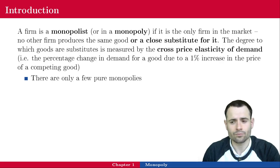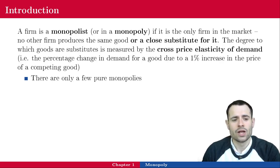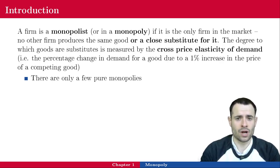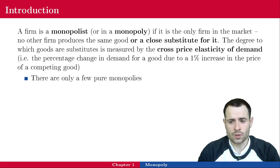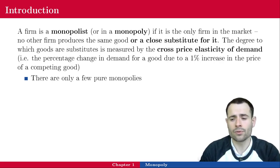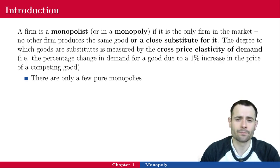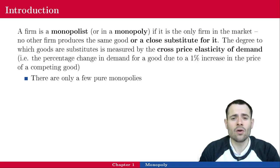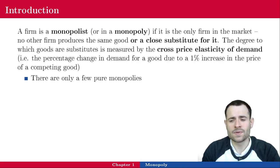The degree to which goods are substitutes is measured by the cross-price elasticity of demand, which is the percentage change in demand for a good due to a one percent increase in the price of a competing good. For example, if the price of Pepsi Cola increases by one percent, the cross-price elasticity of demand for Coca-Cola would be the percentage change in demand for Coca-Cola. In this case, demand for Coca-Cola will likely increase.